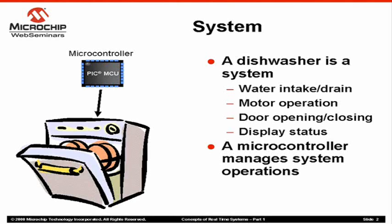Dishwashers also provide a variety of wash cycles to handle different types of utensils and the amount of cleaning they need. Also, if you open the door of a dishwasher in the middle of its operation, most probably it will sense that the door is opened and it will stop its operation. The latest high-end dishwashers may even have an LCD display that shows various status and control information on the front panel. An intelligent unit, such as a microcontroller, can manage various functions in a system in some coherent way. For example, a Microchip PIC microcontroller embedded in a dishwasher can manage various functions to fulfill coherent operation of the dishwasher.